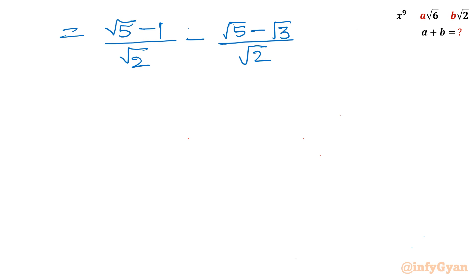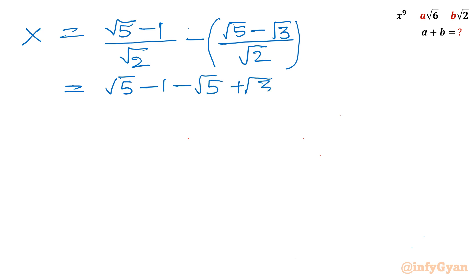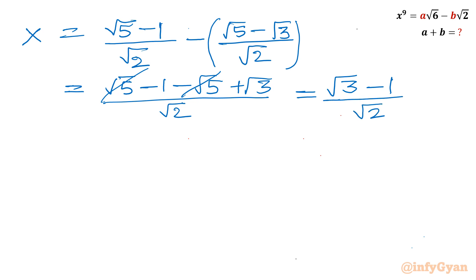Because the square root and the power will cancel out. So here I will put brackets. This was x. Now let us open the bracket: I will write root 5 minus 1 minus root 5 plus root 3, and the denominator is the common root 2. Now we can cancel root 5 with minus root 5. So it is left only root 3 minus 1 over root 2. Now this is our x. Now I will cross multiply. I will be writing x root 2 equal to root 3 minus 1.